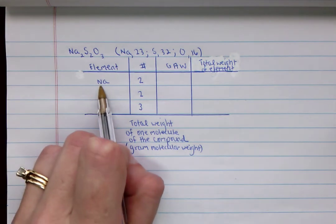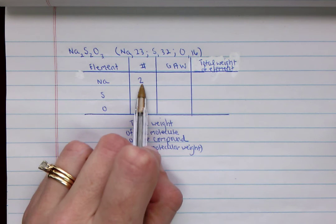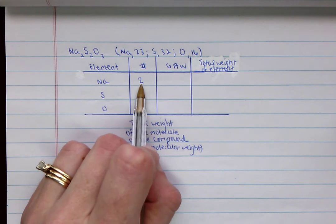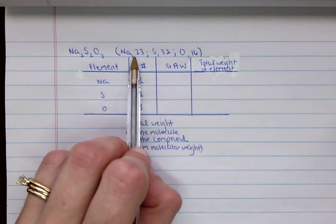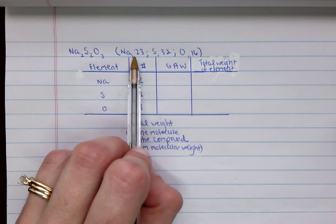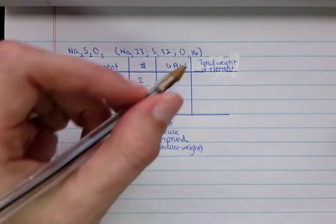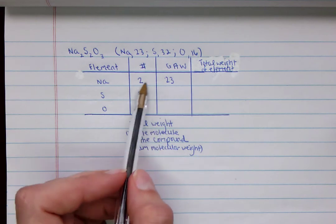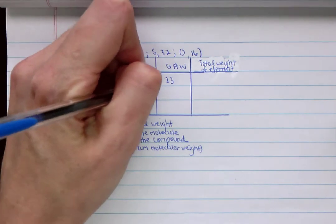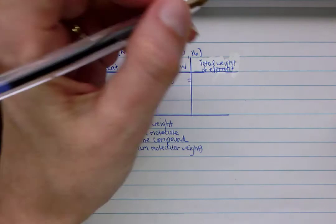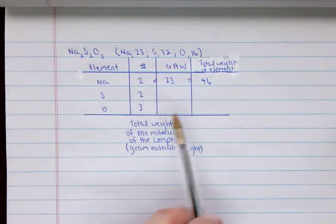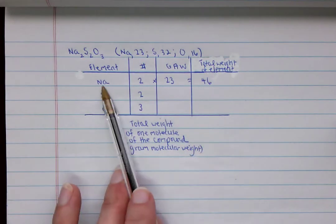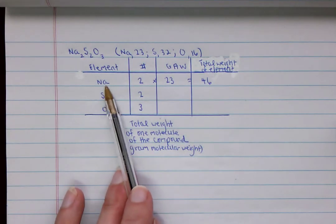So again, we have two atoms of sodium, and its gram atomic weight is 23, so we put a 23 there. And remember, we've got two of them, so if we multiply those two together, we get 46. So that's the weight of the elements for sodium.